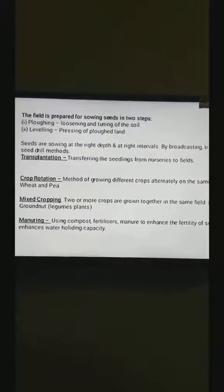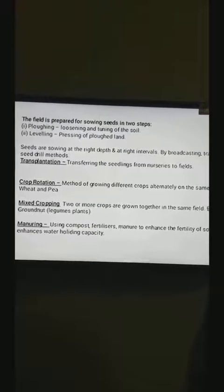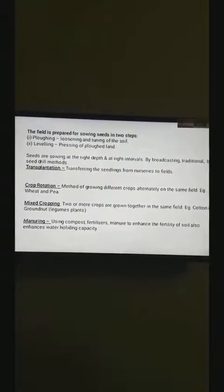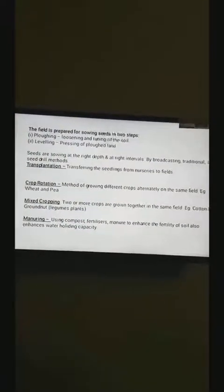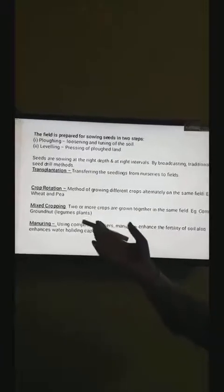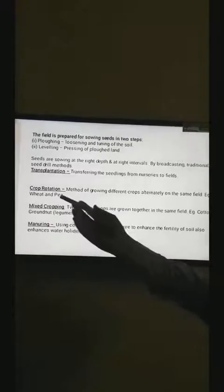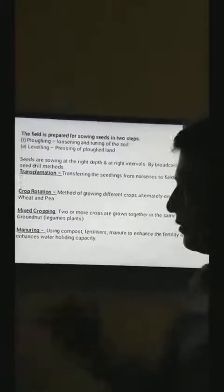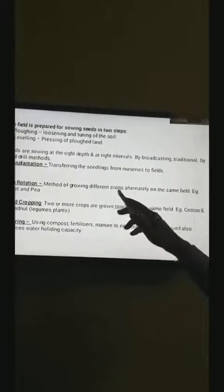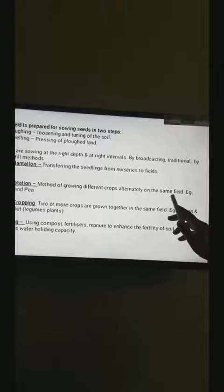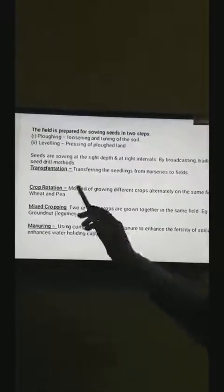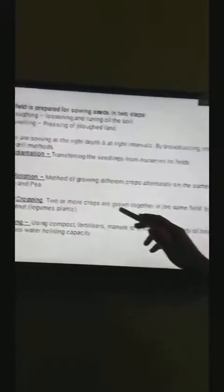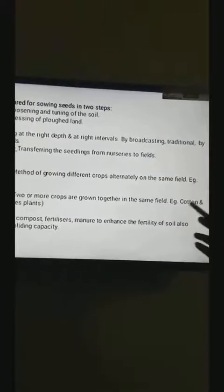Continuous growing of crops make the soil deficient in some specific nutrients and soil loses its fertility. Soil nutrients should be replenished from time to time. The following are two methods by which soil fertility can be replenished naturally. The first is crop rotation and second is mixed cropping. Crop rotation is the method of growing different crops alternatively on the same field, not together. For example, wheat and pea plant. Whereas mixed cropping is a type of cropping method in which two or more crops are grown together in the same field. Like cotton and groundnuts.